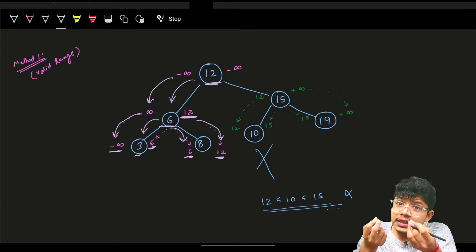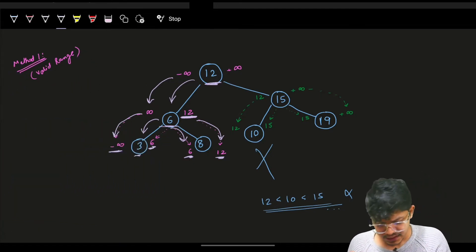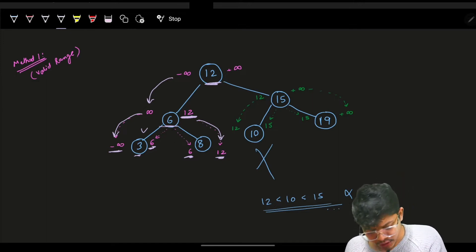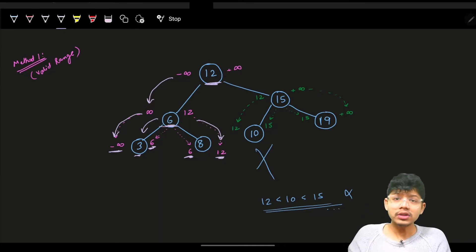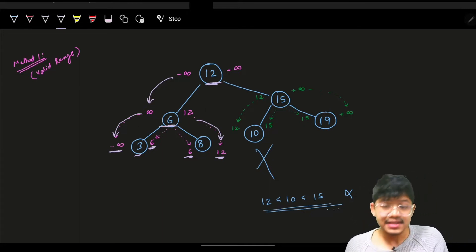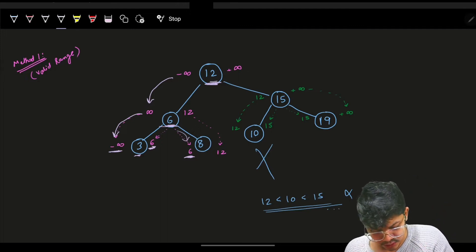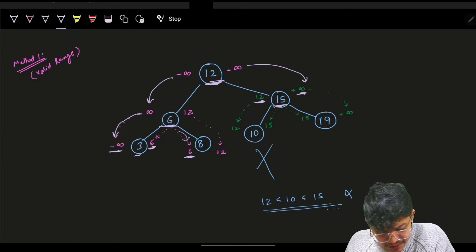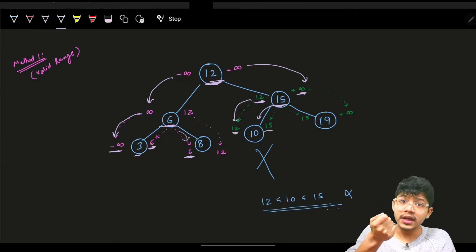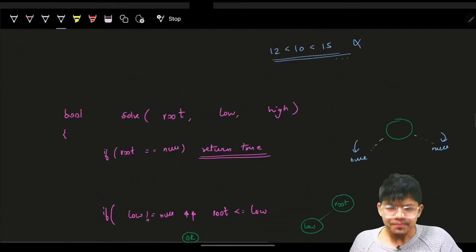Each node propagates its own value to its children as the new bound. Going left, a node propagates its value as the new upper limit. Going right, it propagates its value as the new lower limit. For the right subtree of 12, every node should be more than 12. Node 15 gives its children the range: less than 15 but more than 12, or more than 15 and less than infinity.